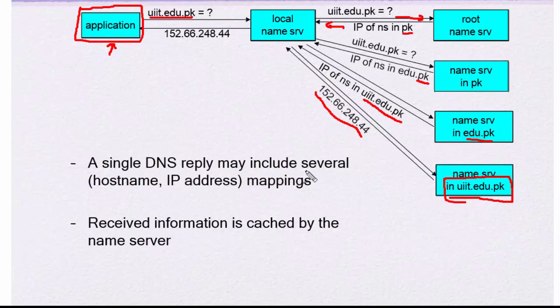A single DNS reply may include several hostname IP address mappings. Received information is cached by the name server. These all are the name servers, and this is your local name server.